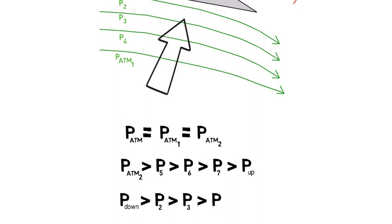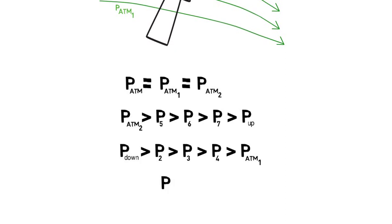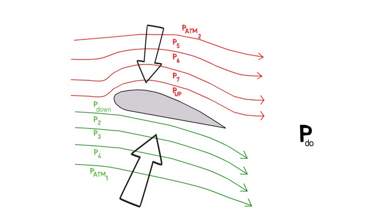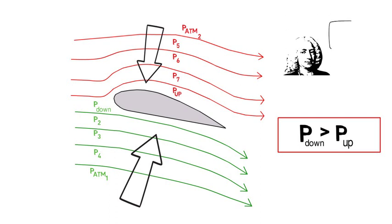If I combine this, I reach an important conclusion. This is the conclusion I wanted to have in the beginning of this video: P down, the pressure right below the wing, is bigger than P up, the pressure above the wing. This brings us back to the beginning of the series of videos, where we wanted to understand why the air moves faster above the wing. The reason is that the external pressure is lower there, and now you can understand why it happens.